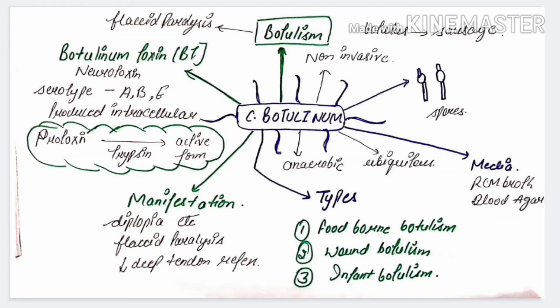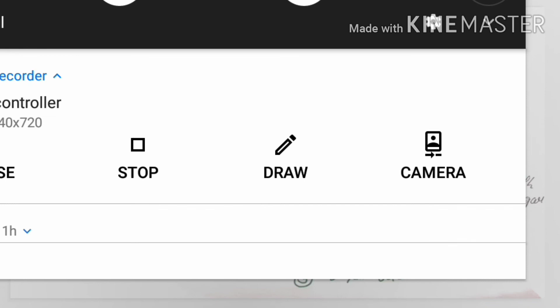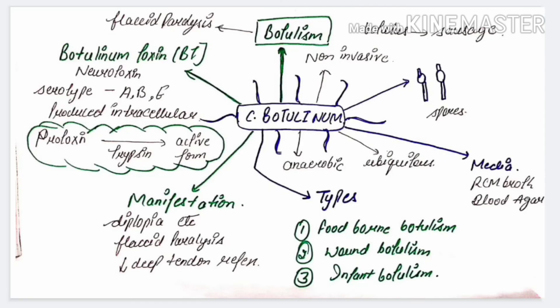Botulism is of three types: food-borne botulism, wound botulism, and infant botulism. Food-borne botulism results from the consumption of food contaminated with preformed botulinum toxin. The most common sources are homemade canned foods.